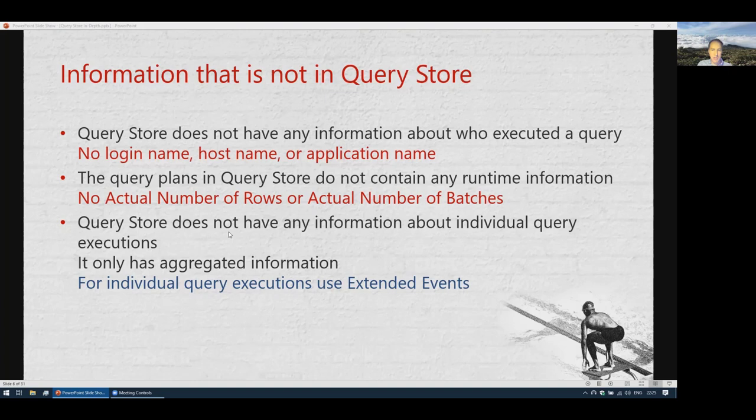Query Store does not have information about individual query executions — it only aggregates information for intervals. So for each default one-hour interval, it has execution count, CPU, and so on, but no individual execution details. If you need that, you would have to use extended events or traces.